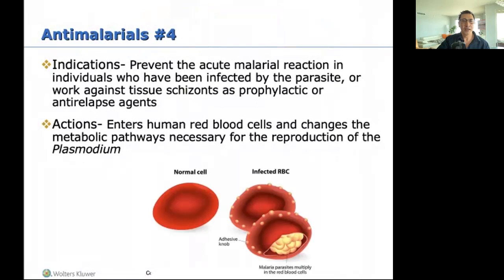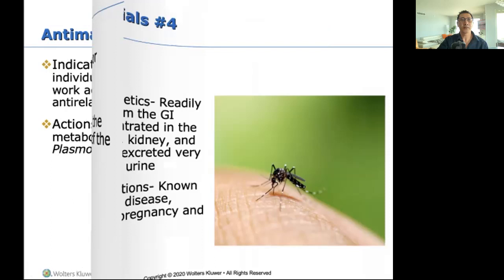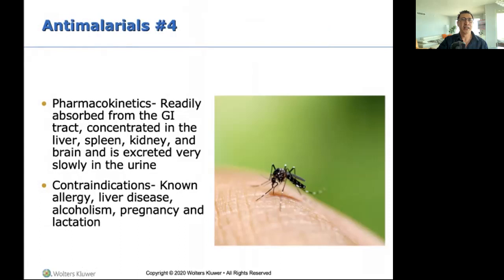Remember, the parasites get into your bloodstream and your RBCs, and that's what the mosquitoes suck out and pass on to the next person. What these antimalarials do is stop that from happening — so when a mosquito sucks blood from you, it's sucking out clean blood and can't pass the parasite on. The drug is absorbed in the GI tract and concentrated in the liver, spleen, kidney, and brain — that brain involvement is important to know.